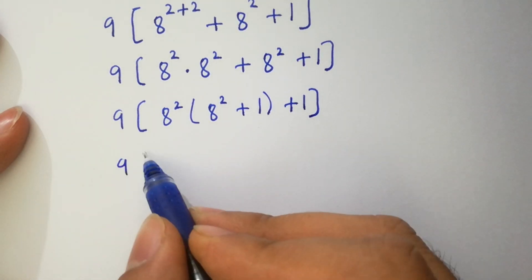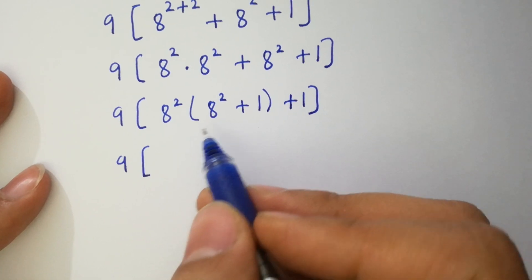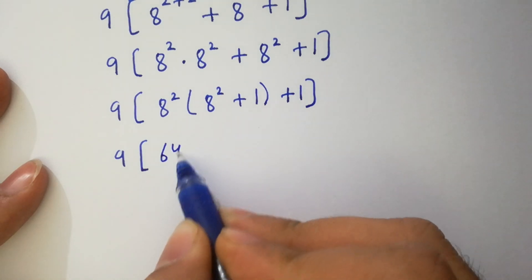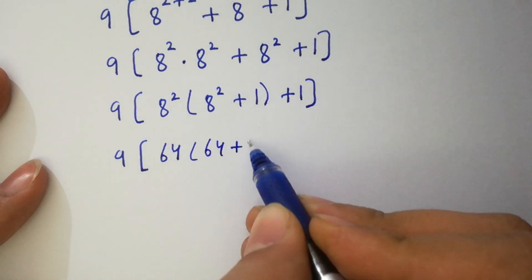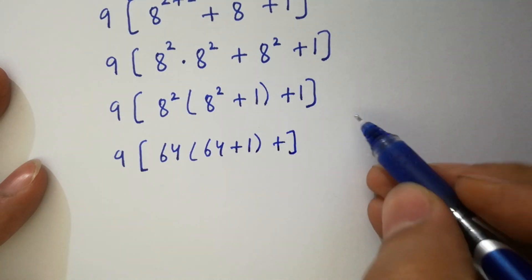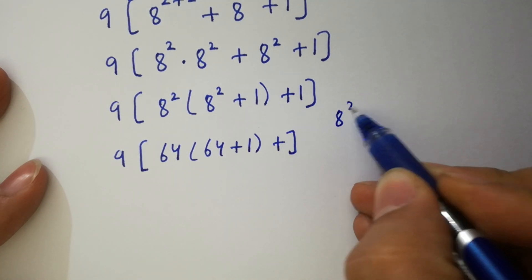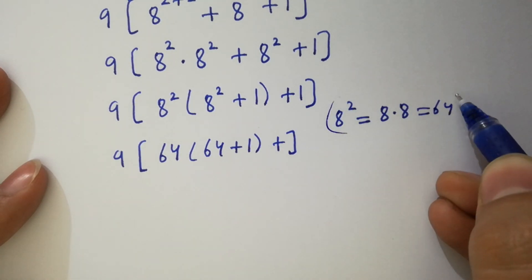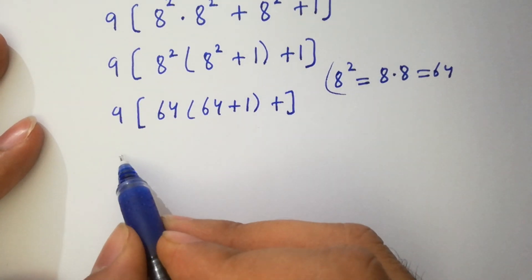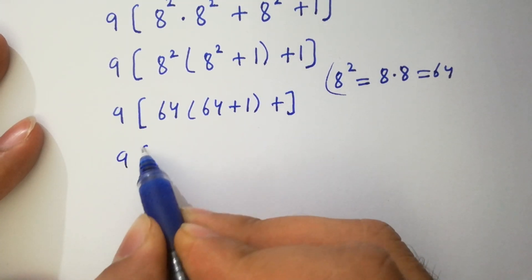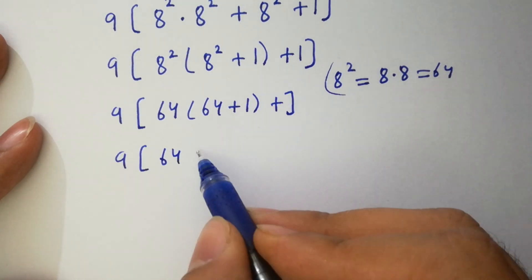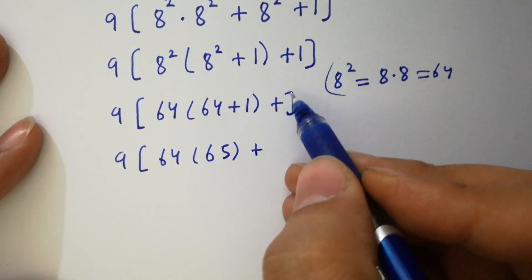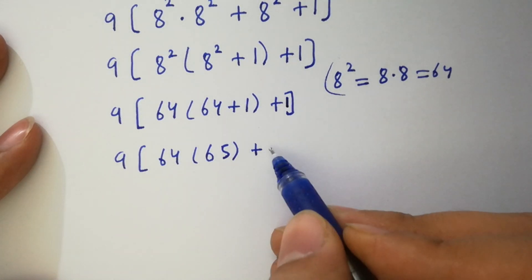Next, we have 8 squared equal to 64, so it becomes 9 times (64 times 64 plus 1) plus 1. Since 8 squared equals 8 times 8 which is 64. So we have 9 times (64 times 65), plus 1 as it is — since 64 plus 1 is 65.